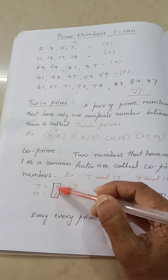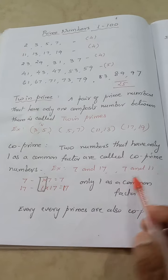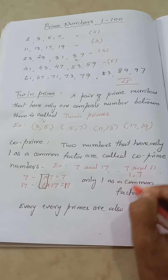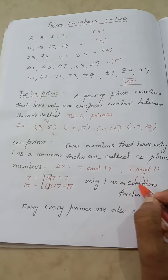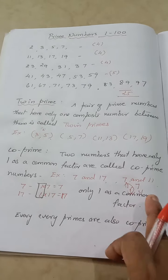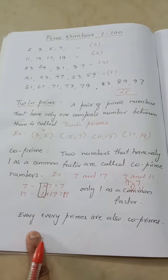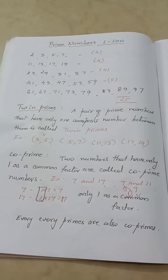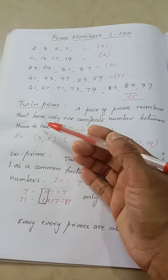The only common factor of 7 and 17 is 1, so they are co-primes. Let's do one more: 7 and 11. The factors of 7 are 1 and 7, and the factors of 11 are 1 and 11. The only common factor is 1, so they are co-primes. Also, one important thing — every prime number is also a co-prime.